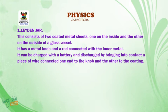Leyden jar capacitor. This consists of two coated metal sheets, one on the inside and the other on the outside of a glass vessel. It has a metal knob and a rod connected with the inner metal. It can be charged with a battery and discharged by bringing into contact a piece of wire connected one end to the knob and the other to the coating.